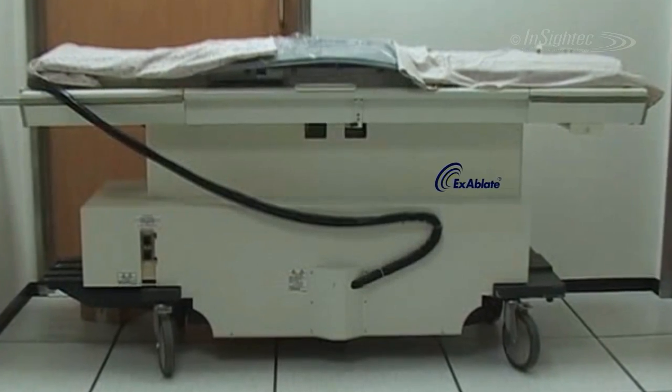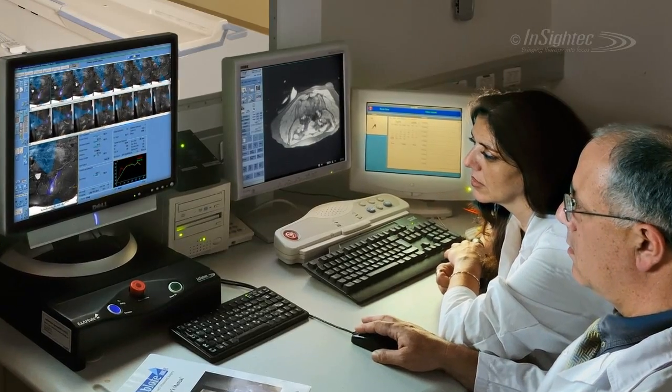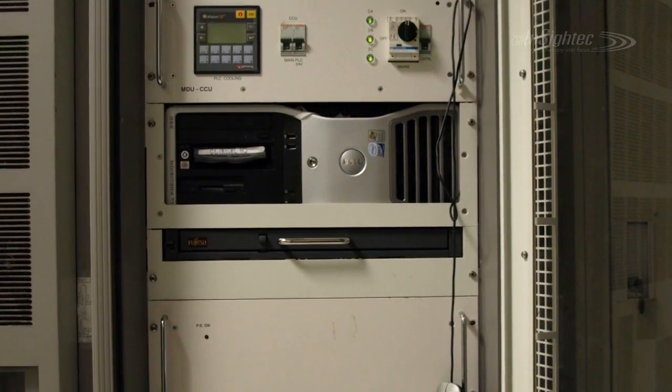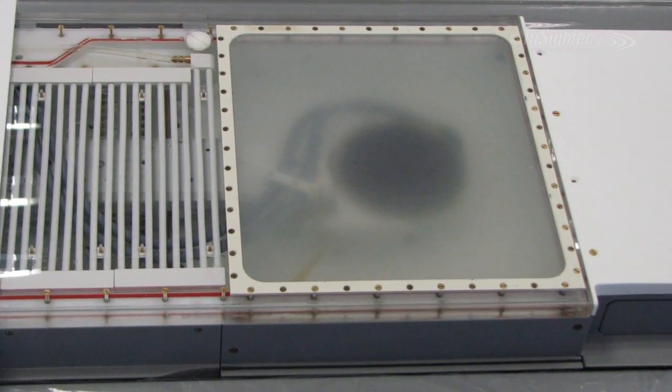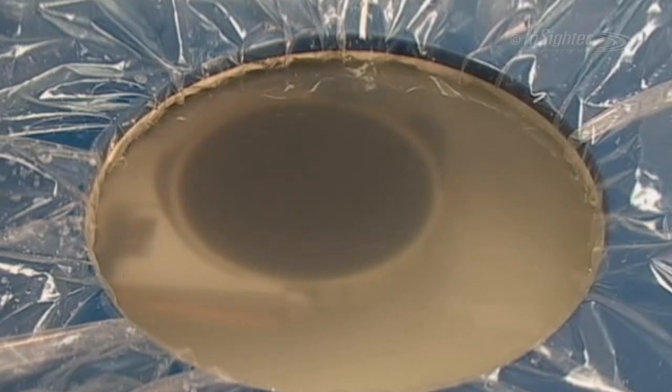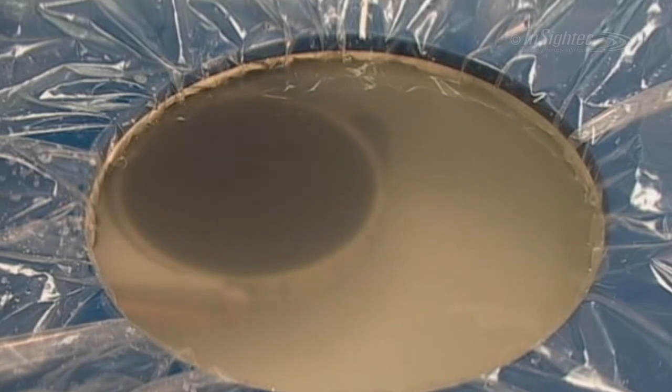Exablate consists of a patient table, a workstation, an equipment cabinet containing the electronics, and a water cooling system. The focused ultrasound source is an electronic phased array transducer immersed in a sealed water bath. The focal depth in the body is controlled electronically to adjust the bone surface sonication size.